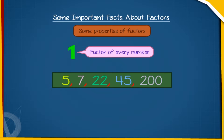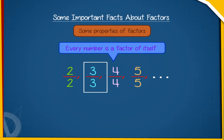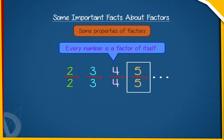The second property of factors tells that every number is a factor of itself, because every number is exactly divisible by itself. For example, 10 is a factor of itself.